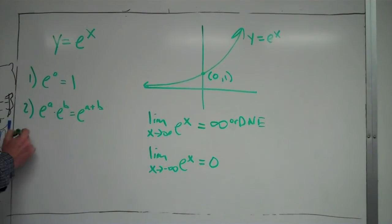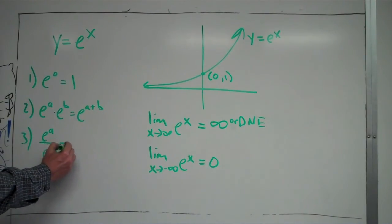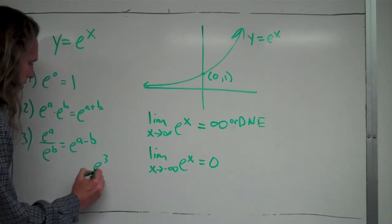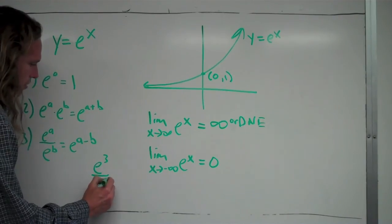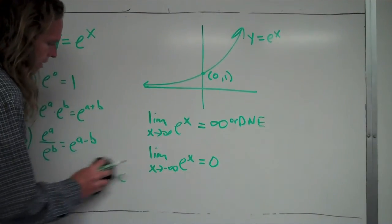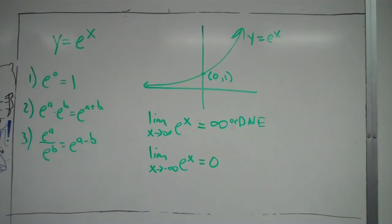Another exponent rule that is very related to this would be something like e to the a over e to the b is equal to e to the a minus b. And again, that works with x to the a over x to the b equals x to the a minus b. But same type of idea here. So, if you had something such as e to the 3rd over e to the 8th, you would just do e to the 3 minus 8. Now, it would end up being e to the negative 5 if you were to simplify that. So, anyways, there's some basic properties of the function e to the x, which is the inverse function of natural log of x.